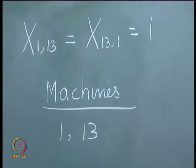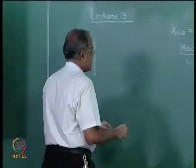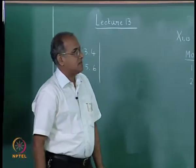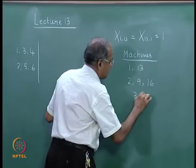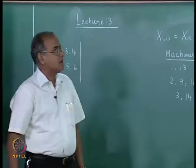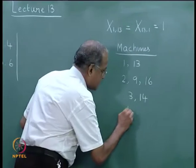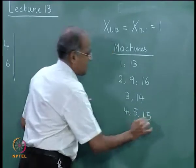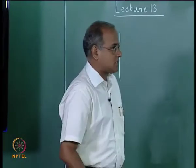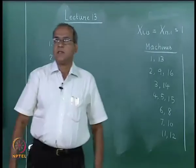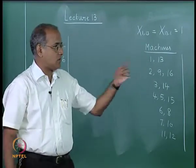Following the chains: 2 goes to 9, 9 goes to 16, 16 goes to 2 — forming a group {2, 9, 16}. Then 3 goes to 14, 14 goes to 3 — group {3, 14}. Then 4 goes to 5, 5 goes to 15, 15 goes to 4 — group {4, 5, 15}. Then 6 and 8 form a group, and 7 and 10, and 11 and 12. The assignment solution gives us 7 groups.